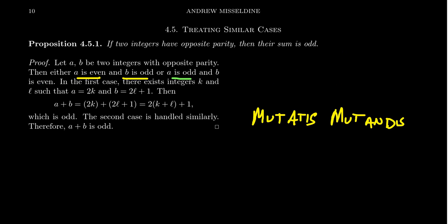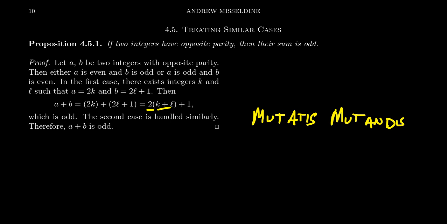For Case 1, where a is even and b is odd: since a is even, there exists an integer k such that a = 2k; since b is odd, there exists an integer l such that b = 2l + 1. Adding them: a + b = 2k + 2l + 1. Factoring out 2 gives 2(k + l) + 1. Since k and l are integers, k + l is an integer, so 2(k + l) is even, and adding 1 makes it odd. Thus a + b is an odd number.